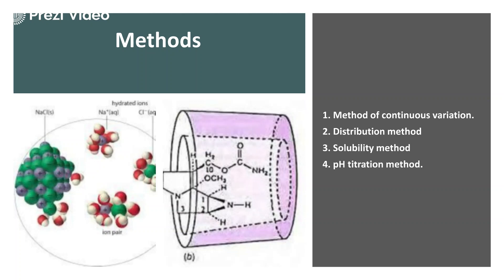Before understanding each individual method, let us first try to understand the principle behind each of them. For the Method of Continuous Variation, the substrate has different properties, the ligand has different properties, and when they combine to form the complex it has different properties. So there is a continuous variation in the physico-chemical properties which we can measure experimentally. If experimentally we find altered properties or variation - for example in the dielectric constant, spectroscopic values, absorbance or transmittance - we can simply say that the complex is formed.